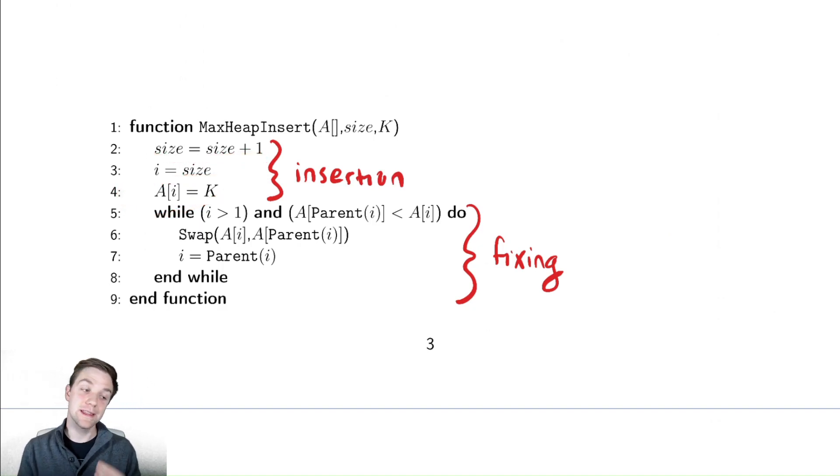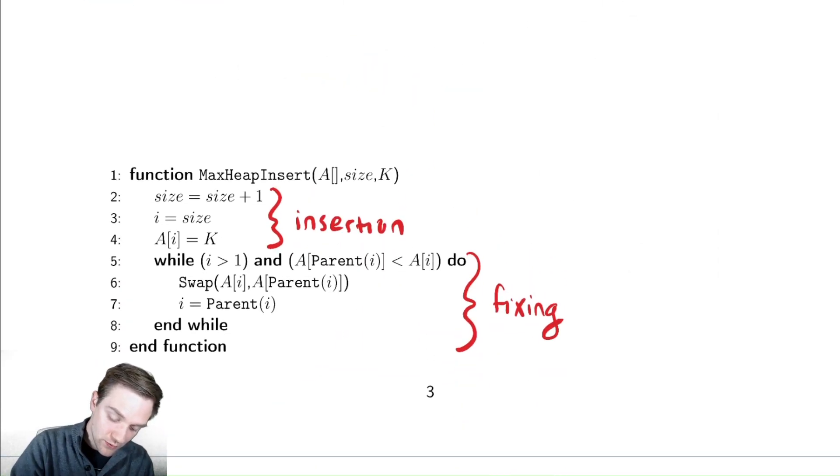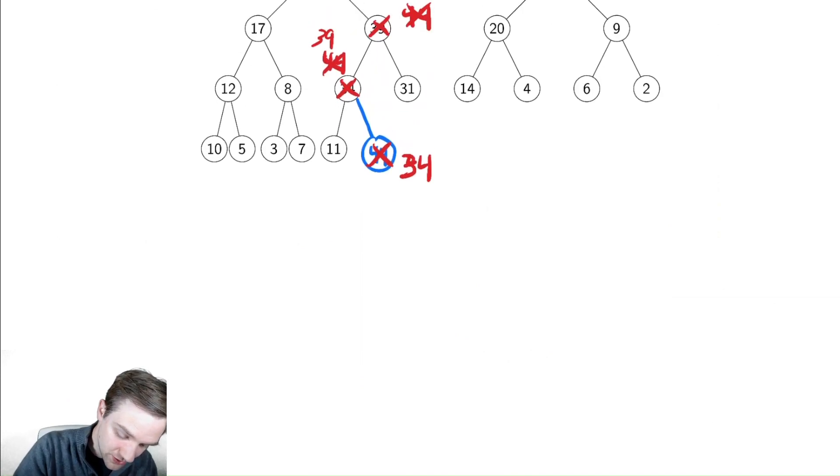How about the fixing? We're going to do that the exact way we said before. We have a special case of being at the root node. We no longer need to swap if we are at the root because there's nowhere to swap to. And we only need to fix so long as the parent is smaller than the child. This violates our heap property that we claimed we had. So we need to swap those two elements to fix that. And we update our location to the parent. So we swap 34 and 44, and once we do that, we move up the tree.